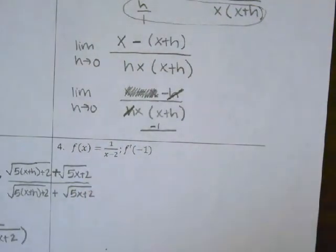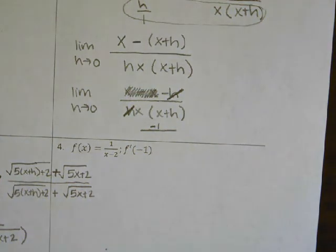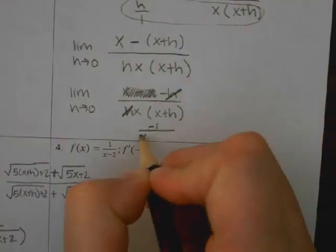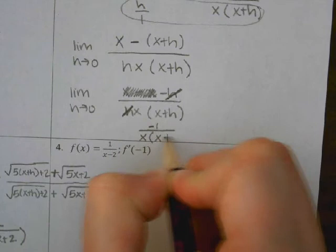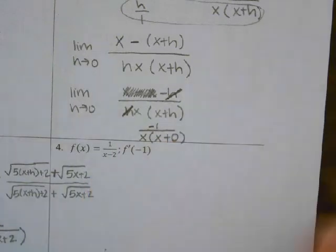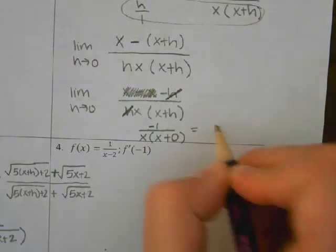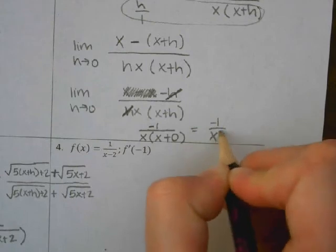On the bottom, we have x times (x+h). Am I able to do direct substitution now? Yeah, I can plug in 0 and not have an issue. So I have x times (x+0), and what does that give you? Negative 1 over x squared.